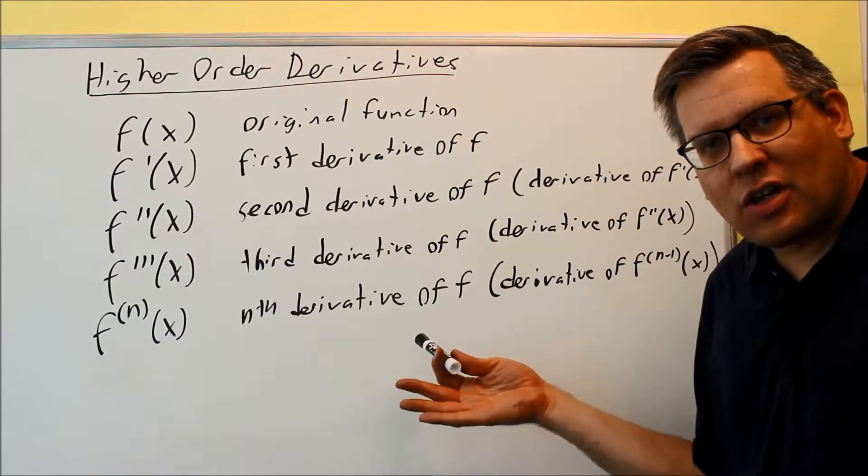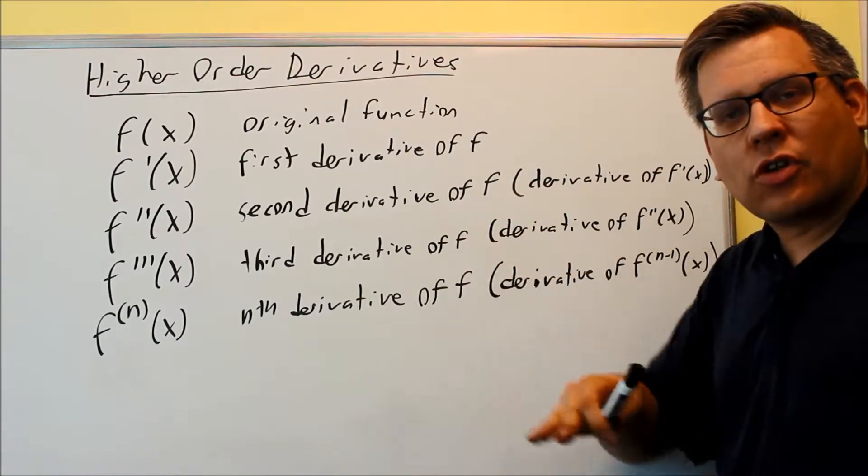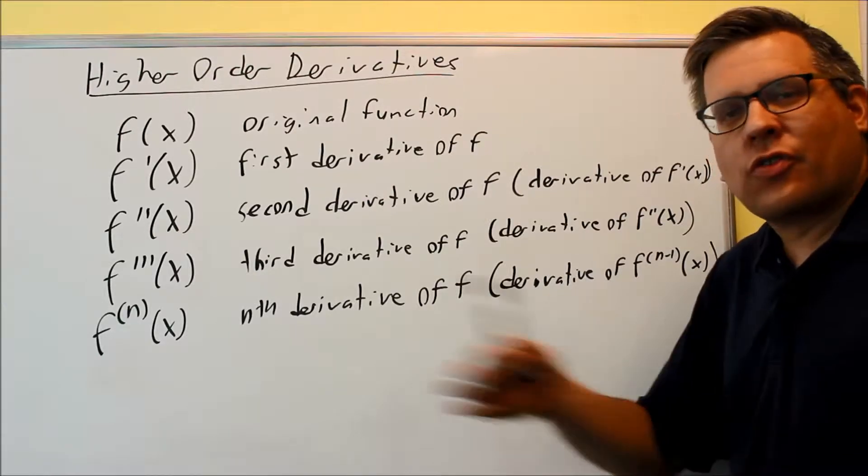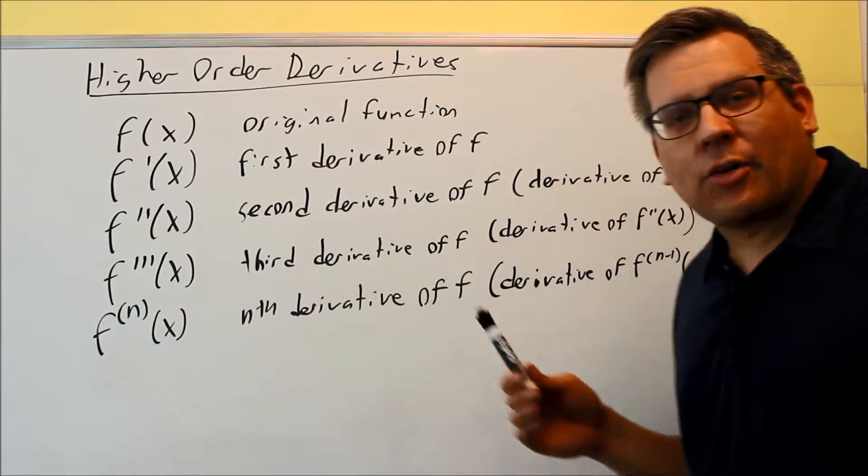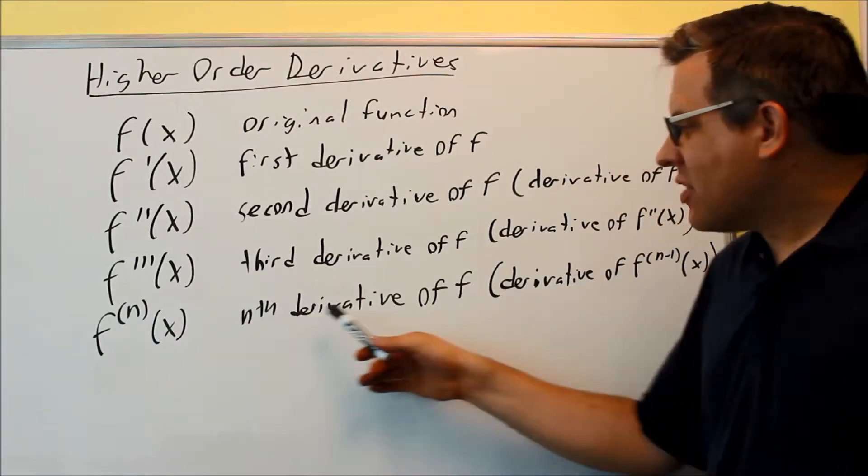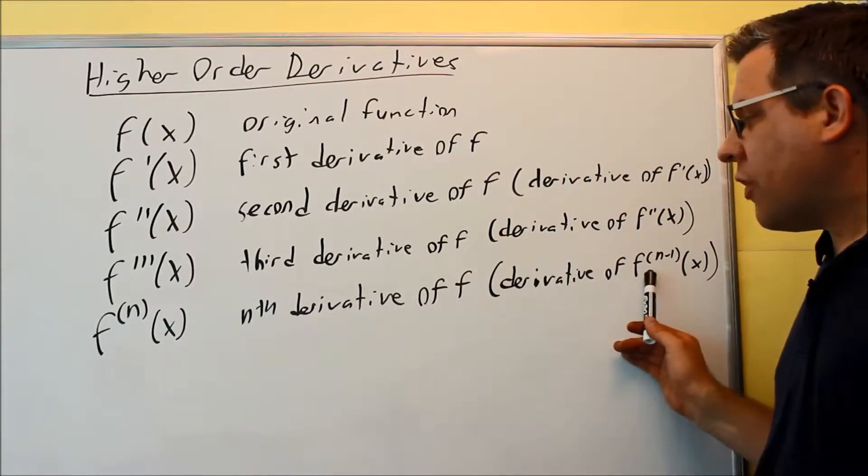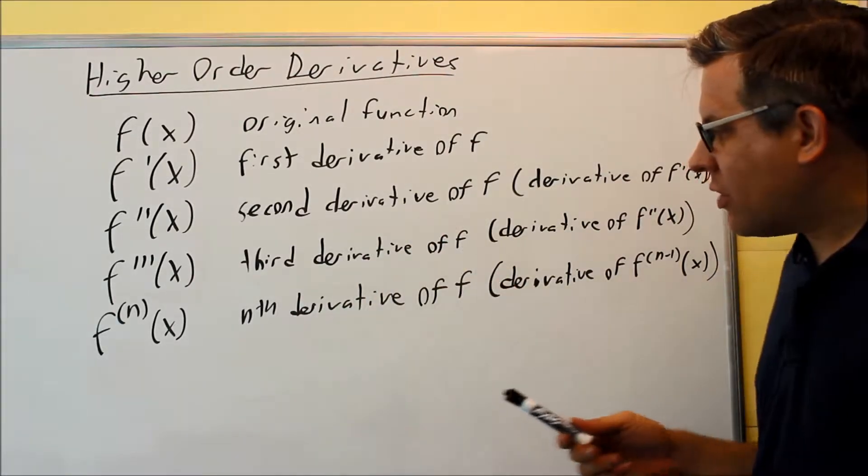You may keep taking the derivative and you'll get to the point where the derivative is going to be zero forever at that point. That's very possible. But you could have higher power derivatives they could ask for. It's the nth derivative. That means it's the derivative of the one right before it.